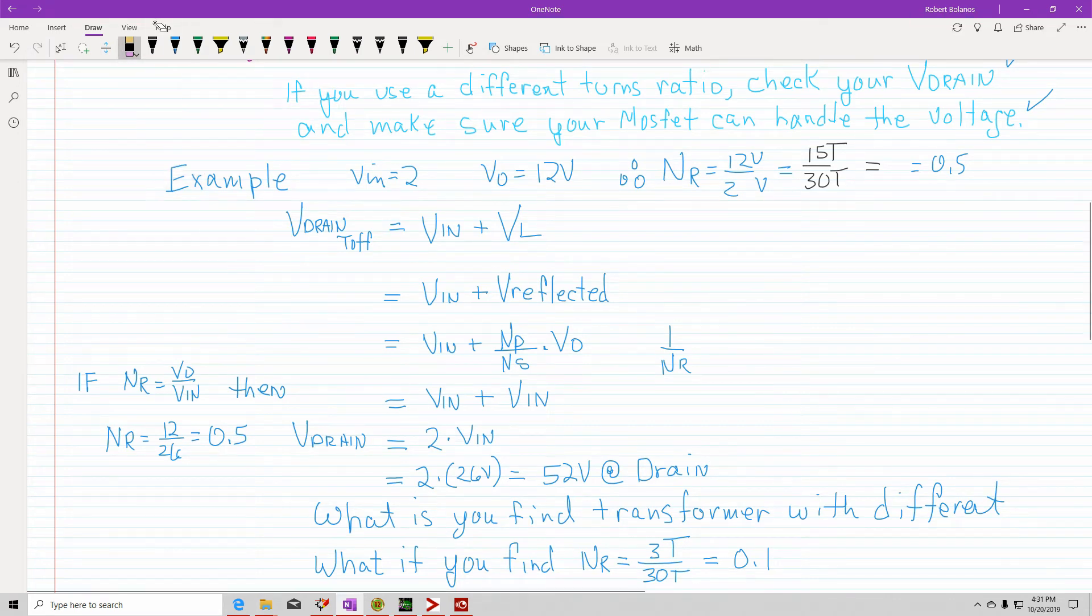So we're going to use 24 volts with the output voltage of 12. So it's going to be 12, 24. And you can use a turns ratio of 15 to 30. So that would be fine. And remember, you figure this by this equation,